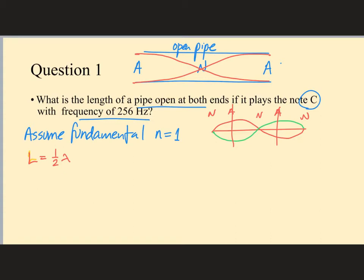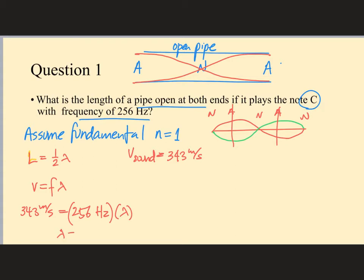What's the wavelength? Remember we have the wave equation V equals F lambda. In this case it's the speed of sound, and unless we're given a specific value, we use 343 meters per second. So V equals F lambda: 343 meters per second divided by 256 hertz. Solving for lambda gives us 1.34 meters.